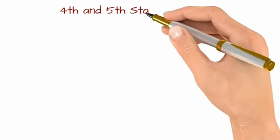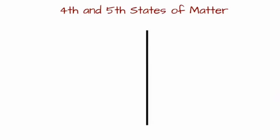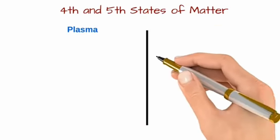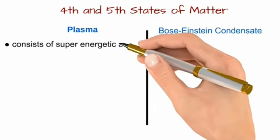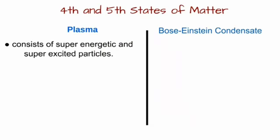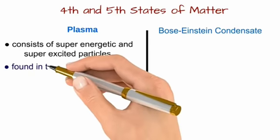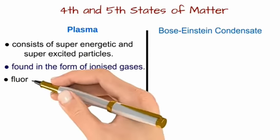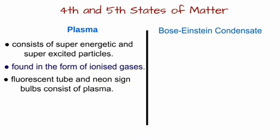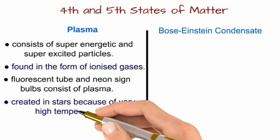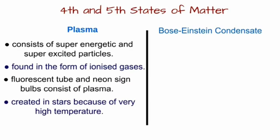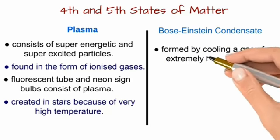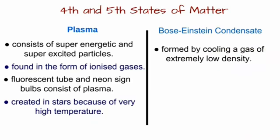At last we will study about the fourth and fifth states of matter, that is plasma and Bose-Einstein condensate. Plasma consists of super energetic particles — they are super excited, meaning they have a lot of energy. It is found in the form of ionized gas. Fluorescent tubes and neon sign bulbs consist of plasma. Plasma is created in stars because of very high temperature.